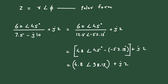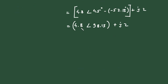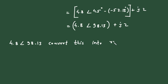Now this portion, 4.8 at an angle 98.13, is in polar form, while j2 is in rectangular form. So we will convert 4.8 at an angle 98.13 into rectangular form, because addition and subtraction are better performed in rectangular form.